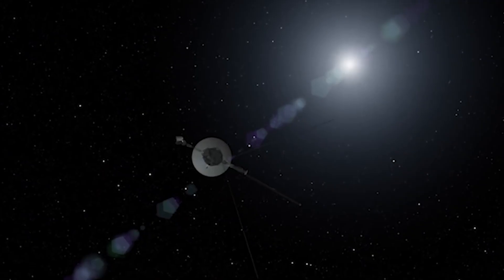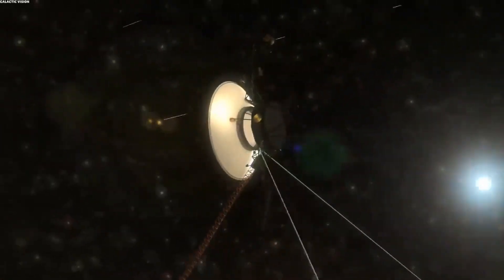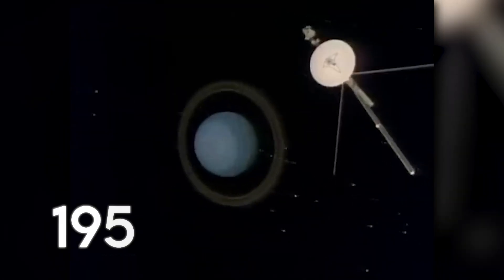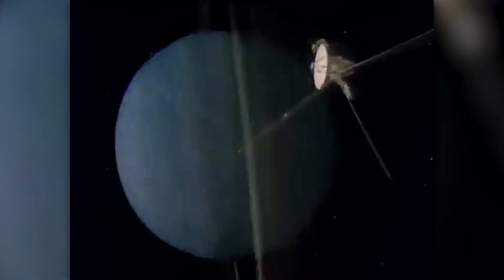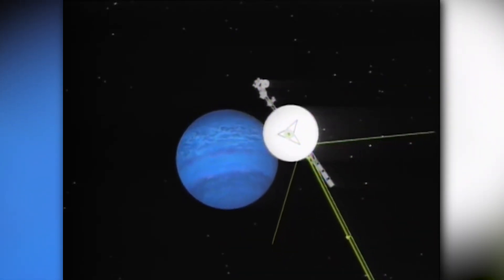Voyager 2, an intrepid explorer, etched its name in history by achieving extraordinary milestones during its journey through the cosmos. In 1986, it became the first spacecraft to pass by Uranus, and a mere three years later, it conducted a flyby of Neptune.